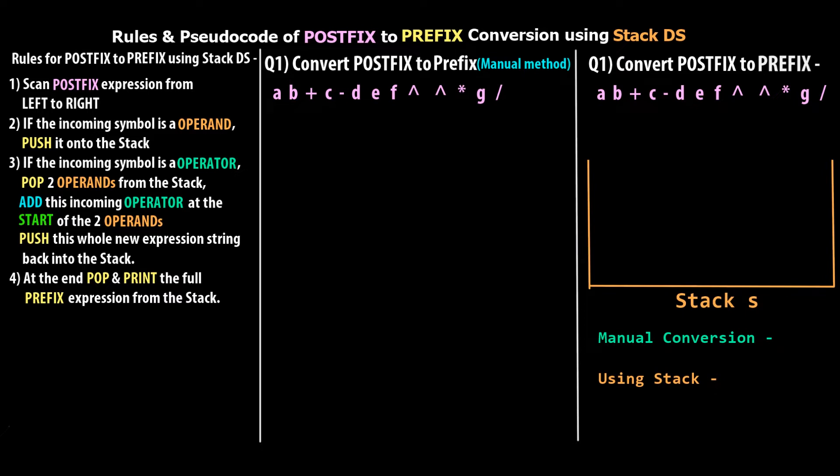So in this tutorial, we are going to see the rules as well as the pseudocode which is required to convert a postfix expression into a prefix expression. This is like part 1, and in part 2 we will write a C++ program to implement it practically.